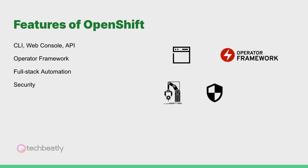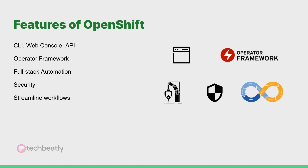The next one is security. Security is already inbuilt with strong RBAC rules, secret management, auditing and logging. And the next one is streamlined workflows. OpenShift has built-in support for CI/CD and you can also integrate with your own choice of CI/CD tools and many other things.